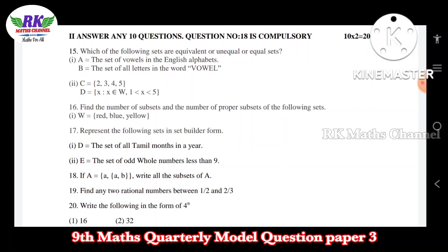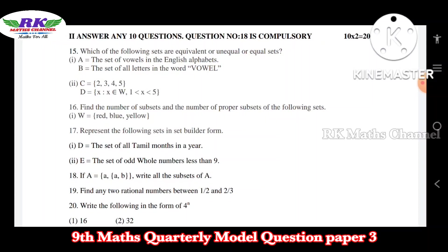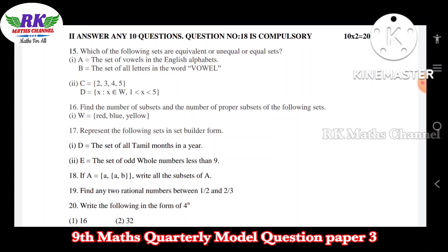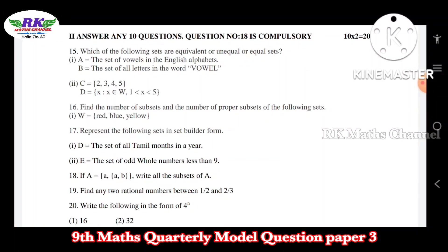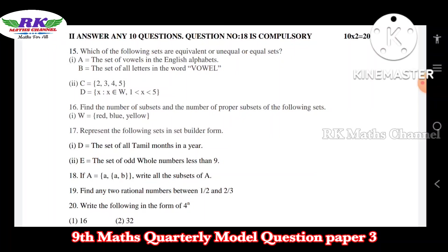Question number 16: find the number of subsets and the number of proper subsets. There are three elements — red, blue, green. Number of subsets: 2 power m, so 2 power 3 = 8. Number of proper subsets: 8 minus 1 = 7. Question number 17: represent the following sets in set builder form.